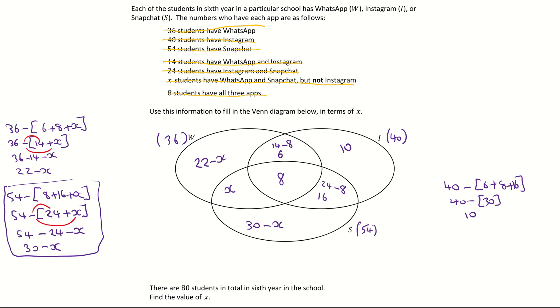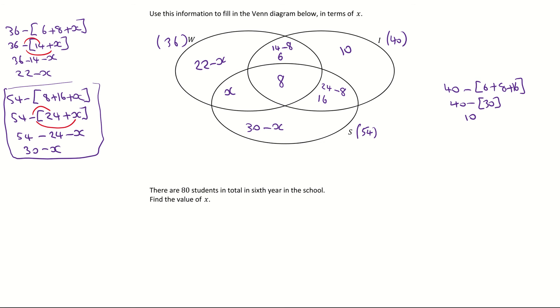Scrolling down now to the next part of the question. It says there are 80 students in total in sixth year in the school. Find the value of x. So it's important here because they have to tell you how many there are in total. If you think of what your Venn diagram is doing, if you add up every single region within your Venn diagram, it should equal the total number of students which is 80. So that's what I'm going to do. I'm going to list them all out, add them together and let it equal to 80.